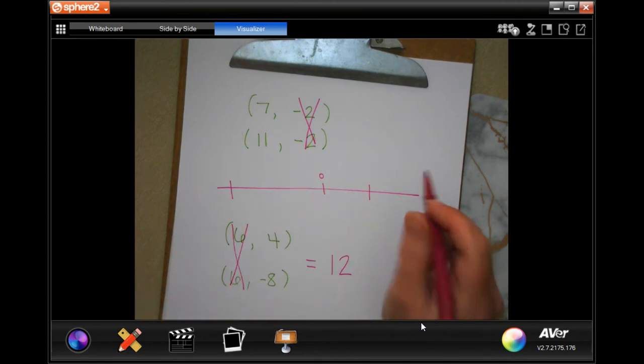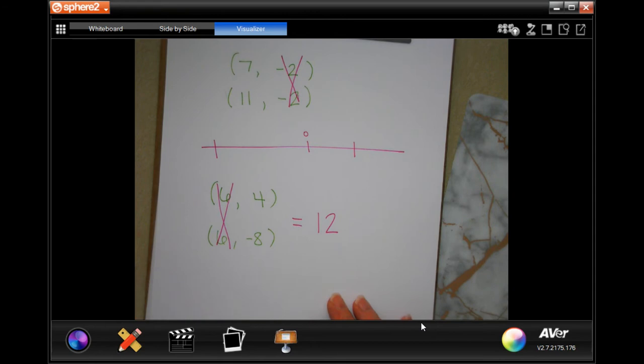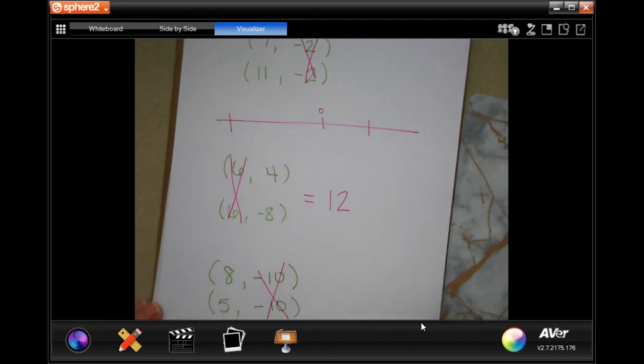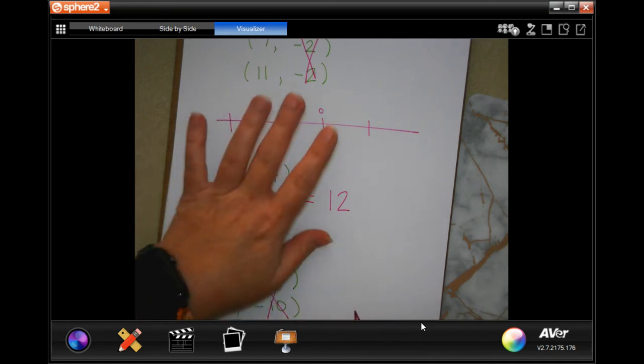Hopefully that makes a little more sense for you. So now I'm going to write down number four. Number four says eight comma negative ten and five comma negative ten. The ones that are identical, cross off. Now I just have to get from five to eight, that's five to six, seven, eight, that's three. Done.